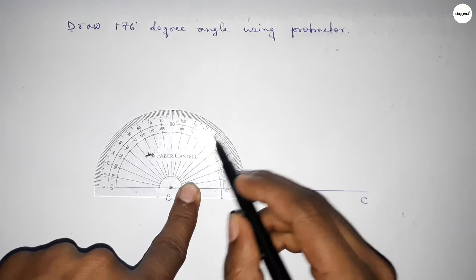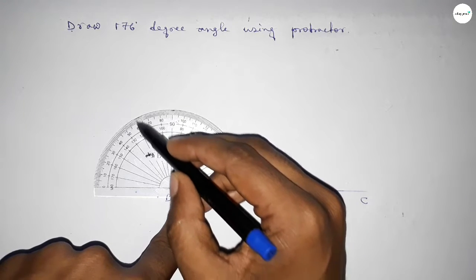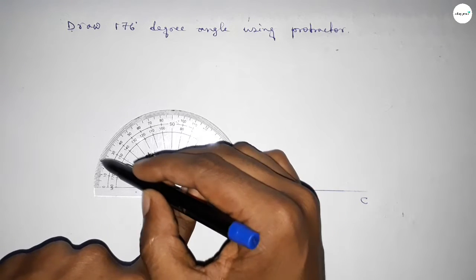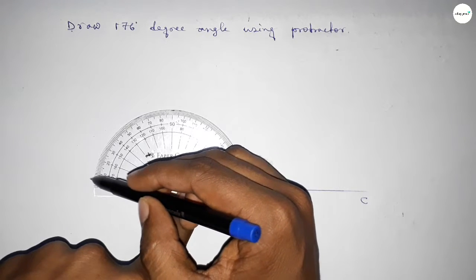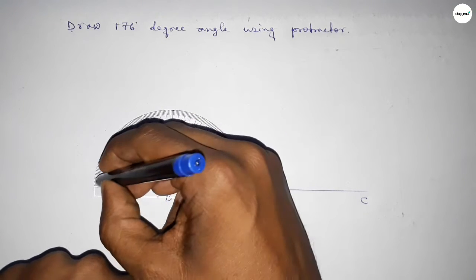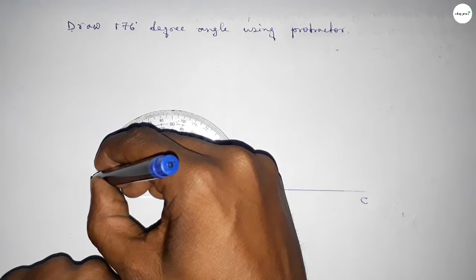Counting 10, 20, 30, 40, 50, 60, 70, 80, 90, 100, 110, 120, 130, 140, 150, 160, 170, and this is 175 and this one 176. So this is 176 degrees.